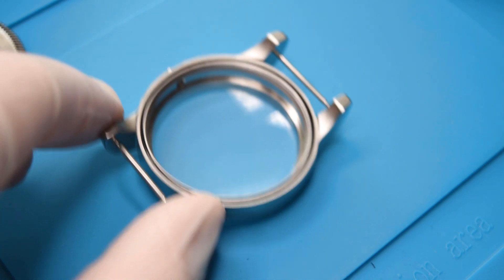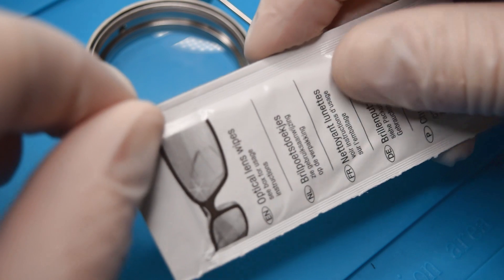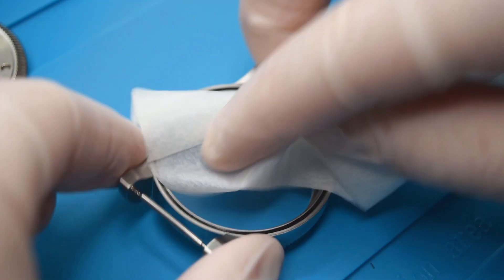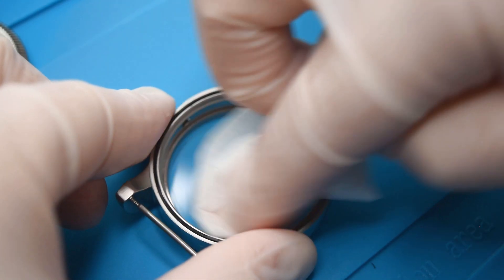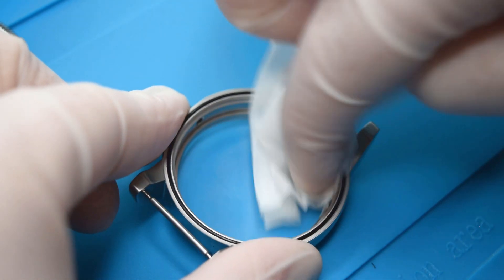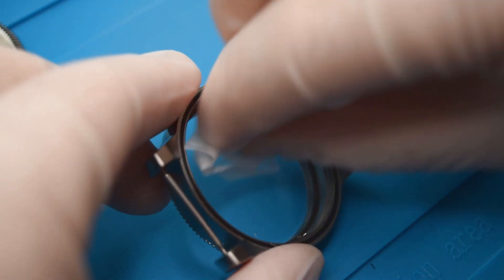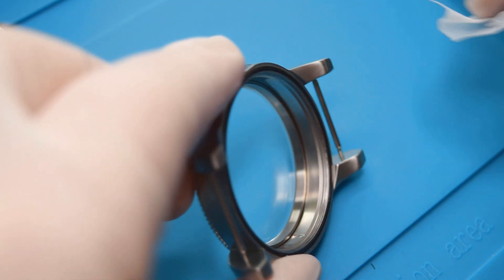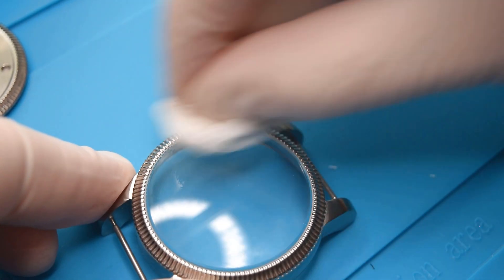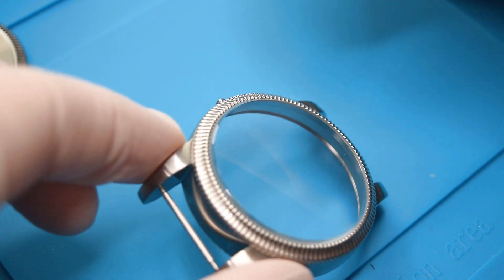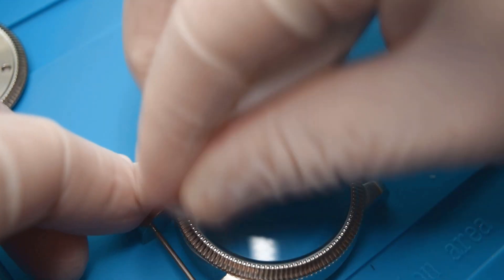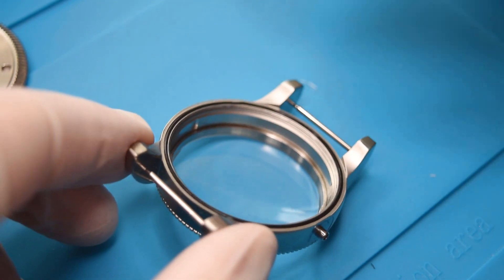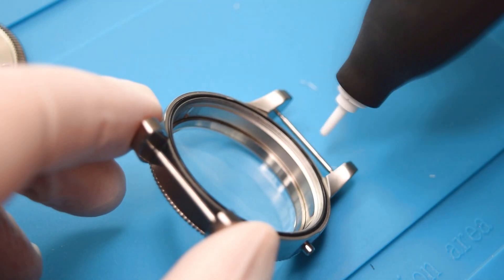And I use for that a lens wipes. They are easy to get in some shop, supermarkets and similar. And they clean really really well the inside of the watch. And then a little bit blowing.